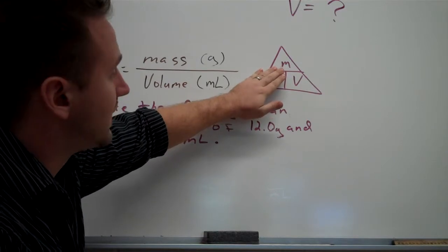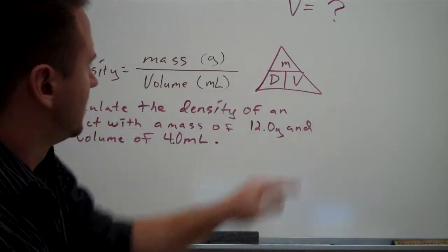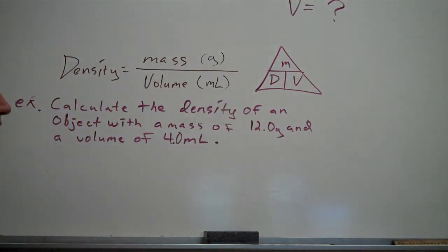This problem states: calculate the density of an object with a mass of 12 grams and a volume of 4 milliliters.